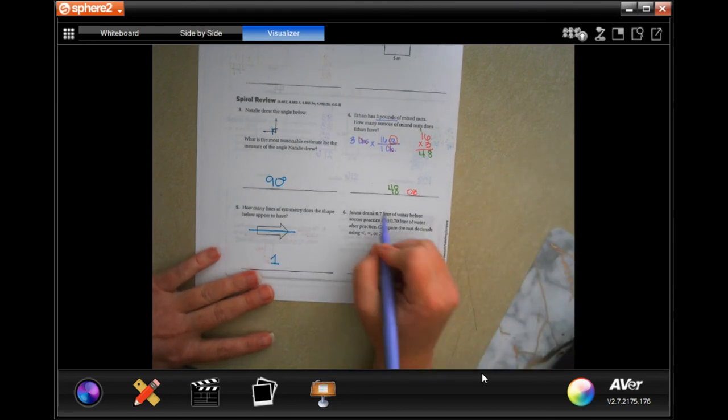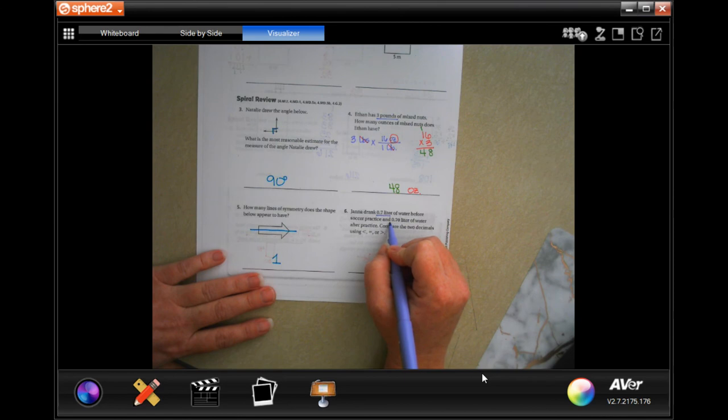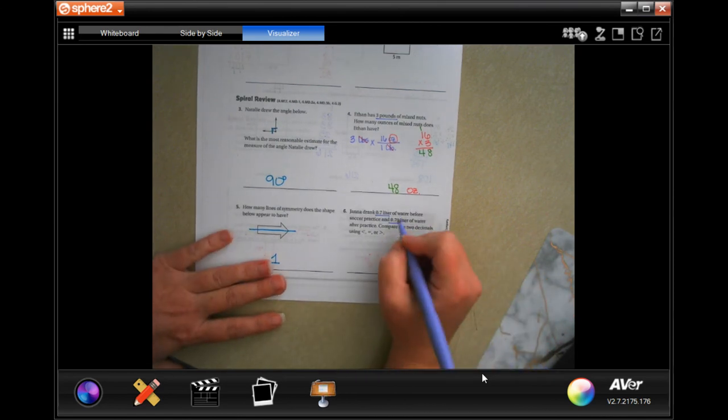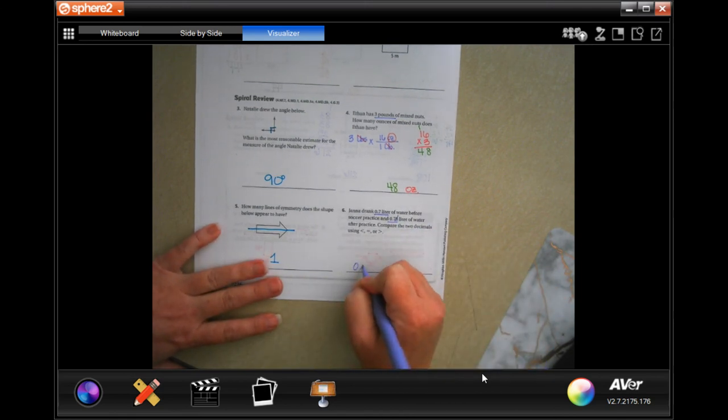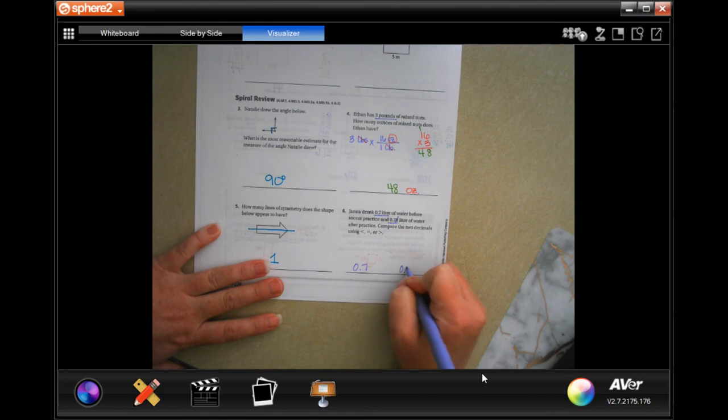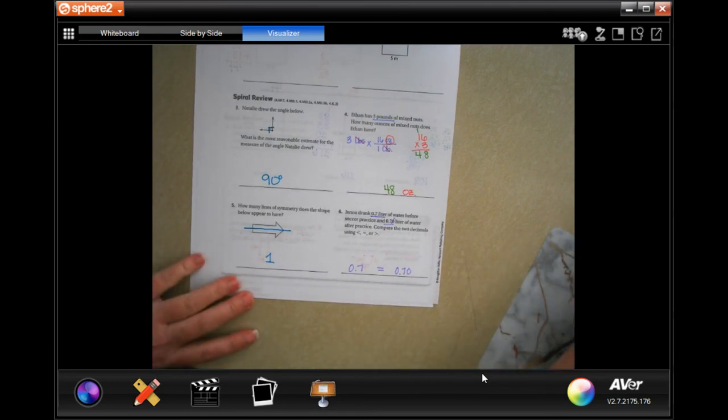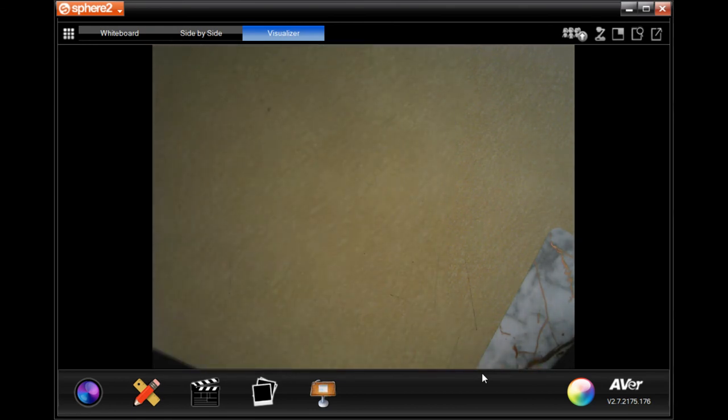Diana drank seven tenths of a liter of water before soccer practice and the same amount of water after practice. Compared to two decimals, adding a zero to the end doesn't change the number. So they're both 0.7—0.7, 0.70. They're equal. All right, guys. Thanks for hanging out for 13.1. Come on back for 13.2. See you soon.